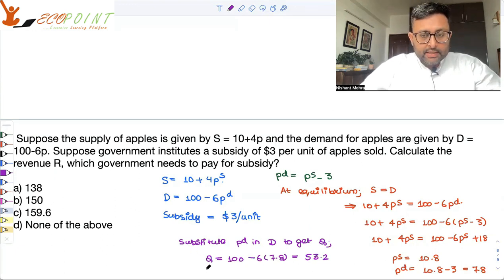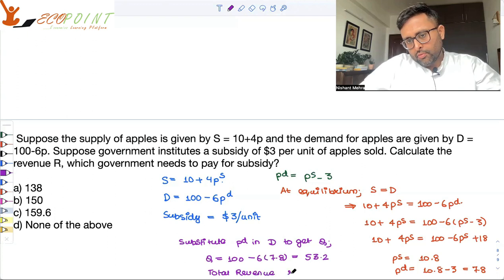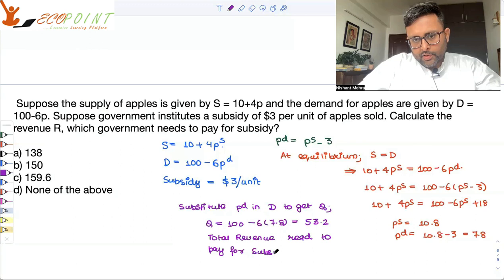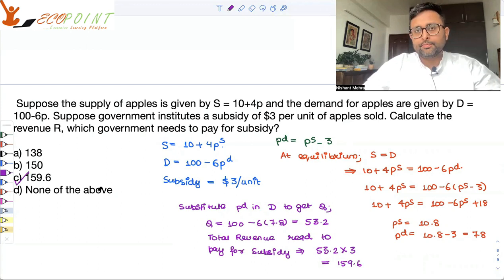So the revenue which the government needs to pay for subsidy is 53.2 times 3. The total revenue required is 53.2 times 3, that will come out to be 159.6. So the answer is C.